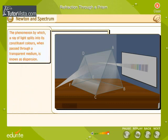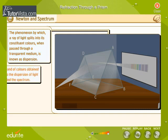This phenomenon by which a ray of light splits into its constituent colors when passed through a transparent medium is known as dispersion. The band of colors obtained due to the dispersion of light is called the spectrum.